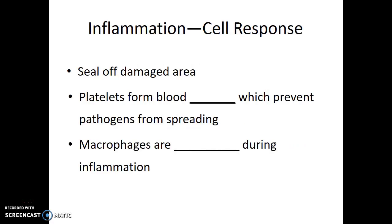Inflammation helps seal off the damaged area and potentially prevents pathogens from spreading. Platelets form a blood clot, which also helps limit pathogen spreading. Macrophages are recruited and activated during inflammation to take care of foreign invading cells before a serious infection starts. That takes us to the end of our discussion of these first two lines of defense. In the next video, we'll discuss the third line of defense — the adaptive immune system.